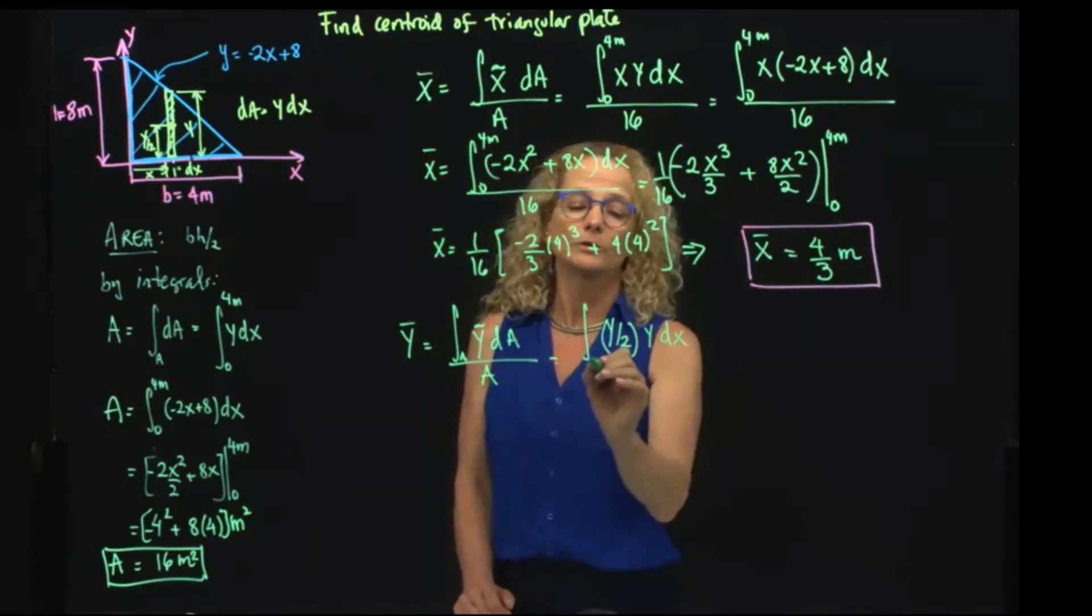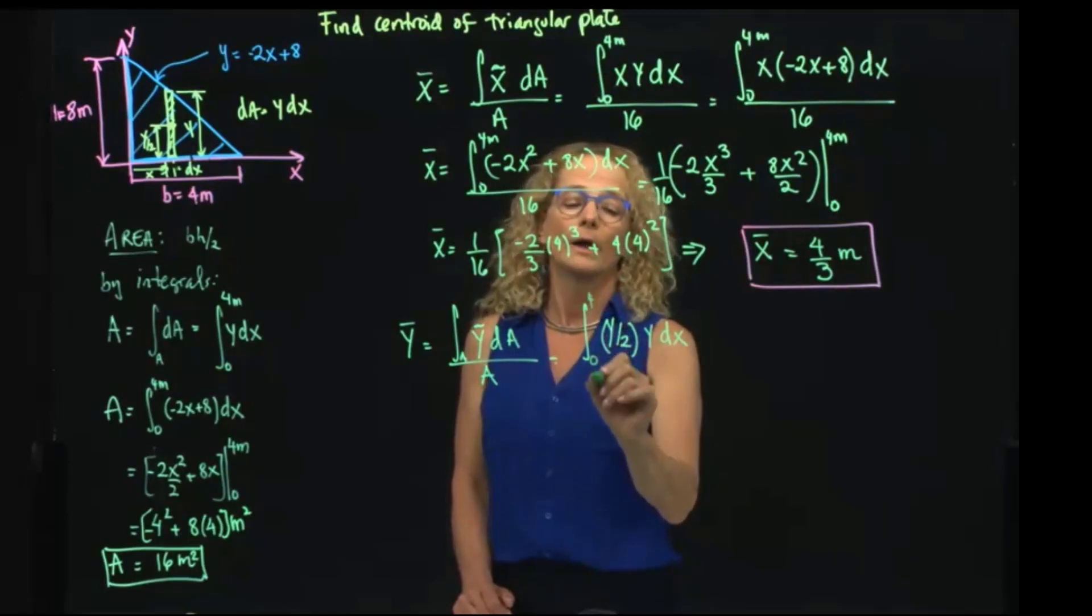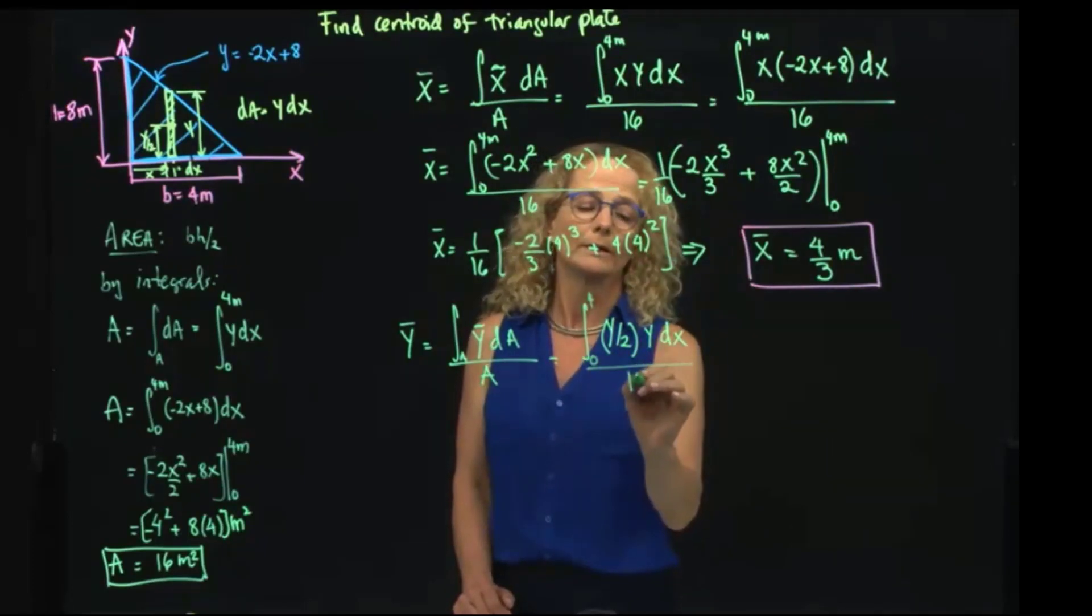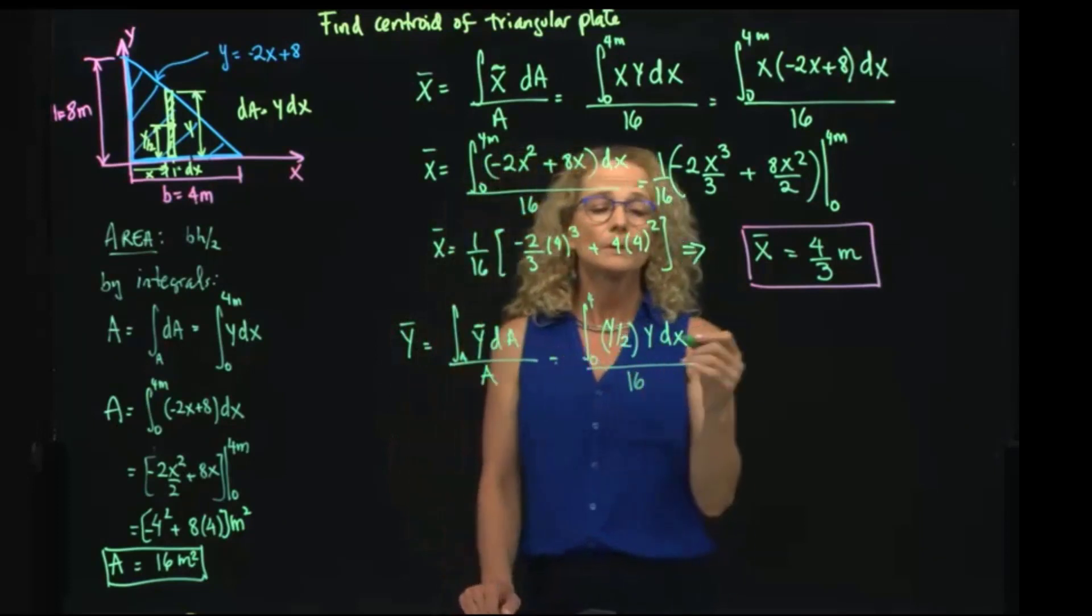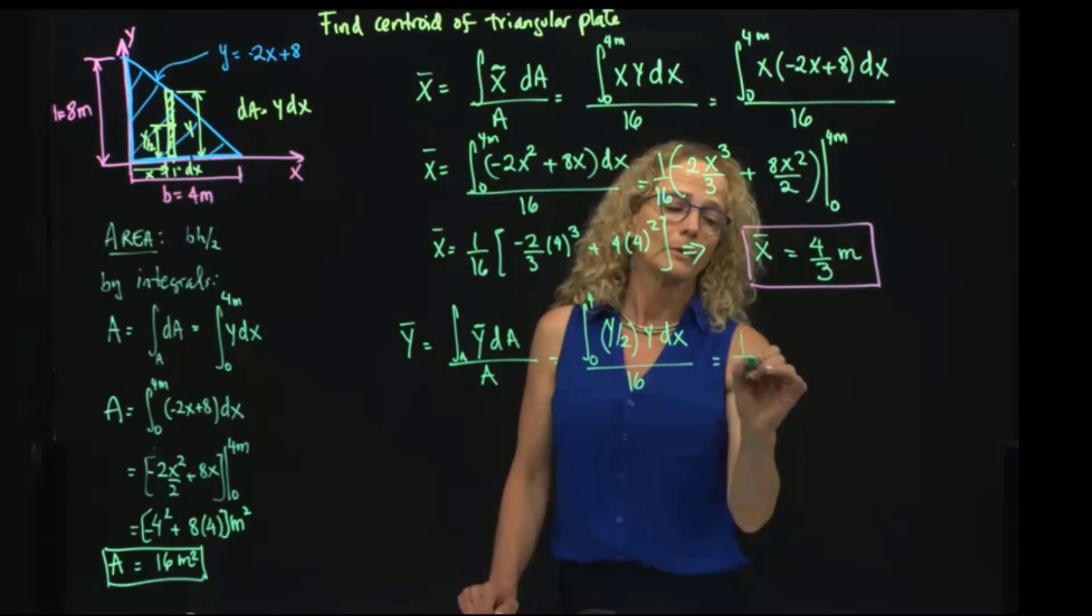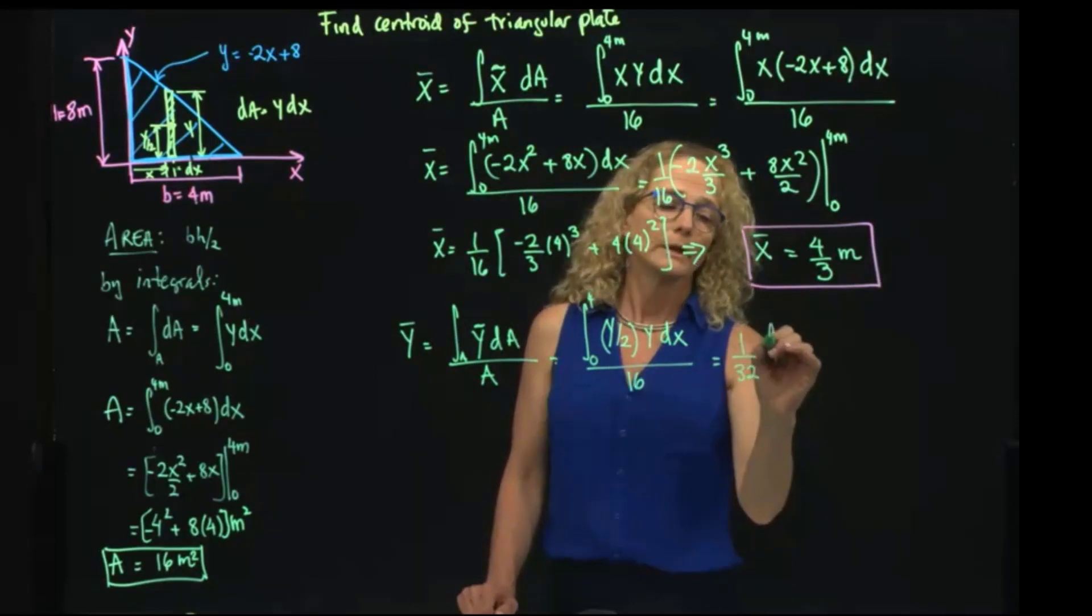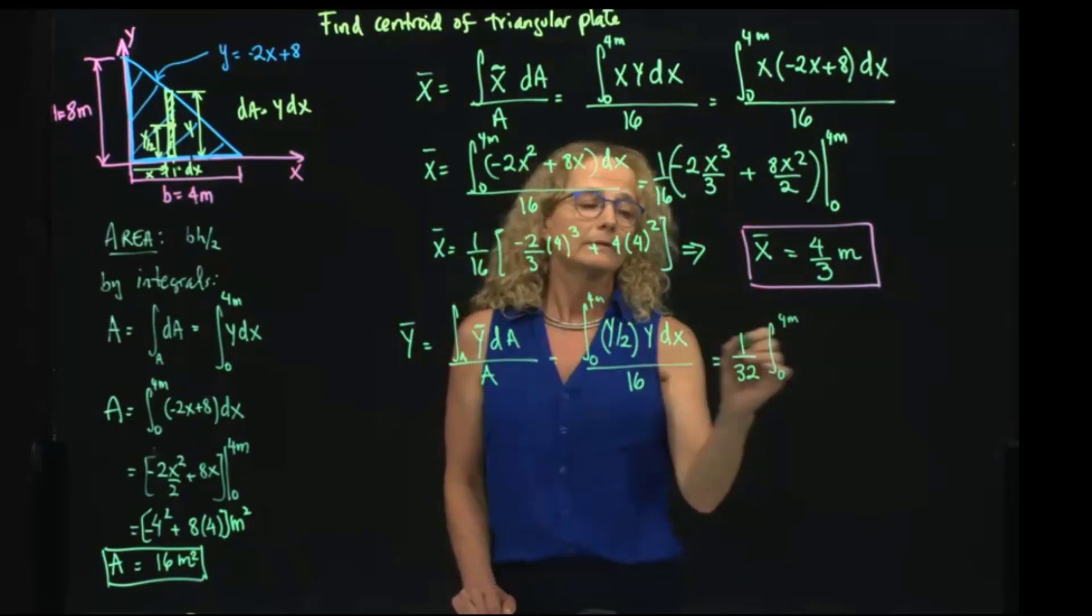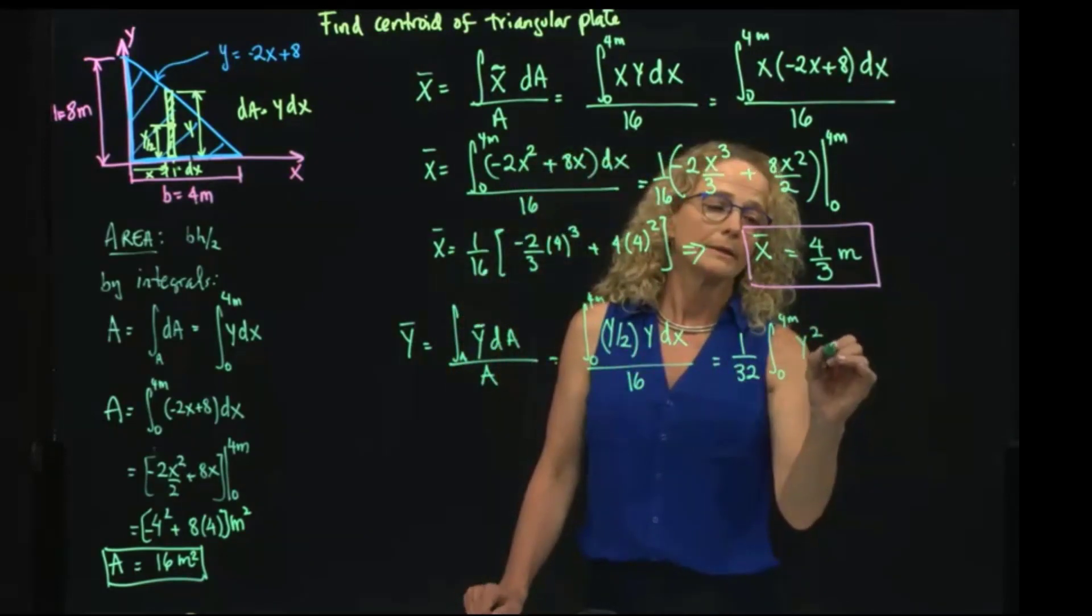My limit of integration will be 0 to 4, and the total area we know already is 16. That gives me, I can take this half out of the integral and gives me 1 over 32, the integral of 0 to 4 meters, and this is Y squared dX.